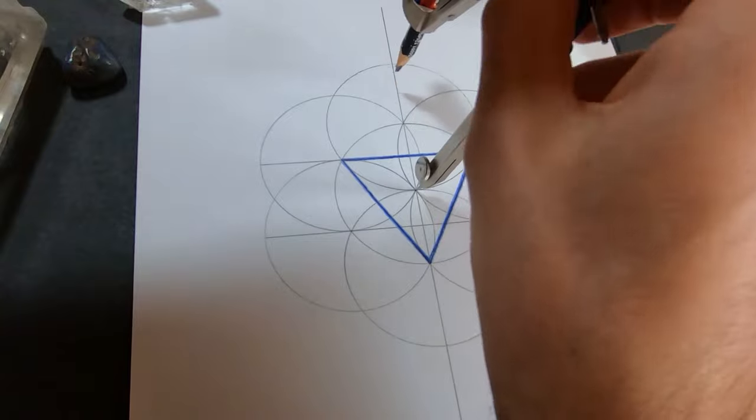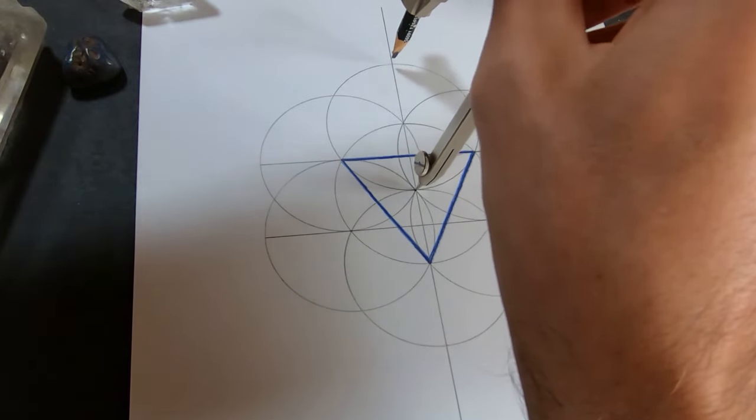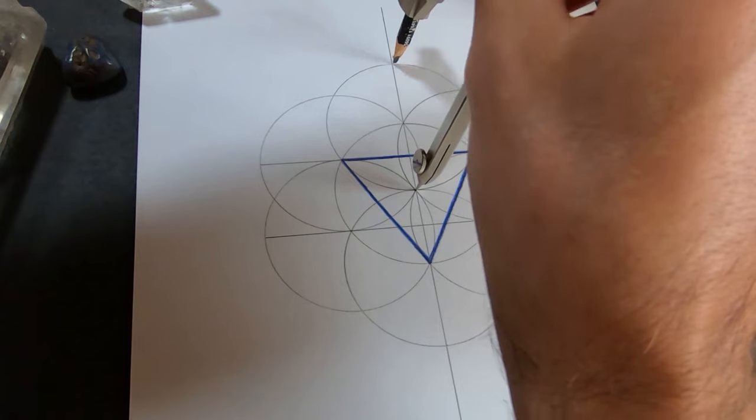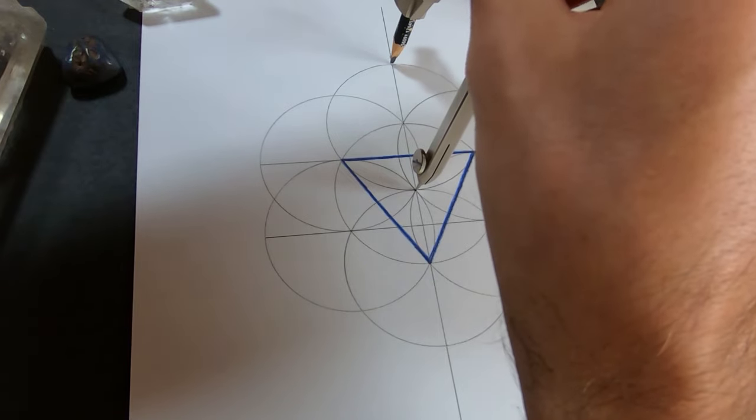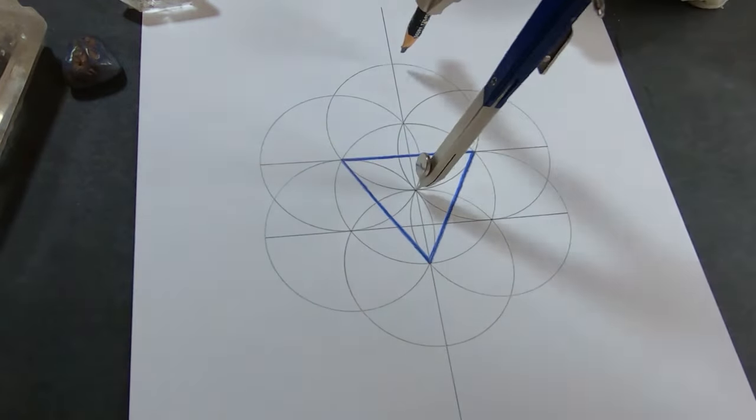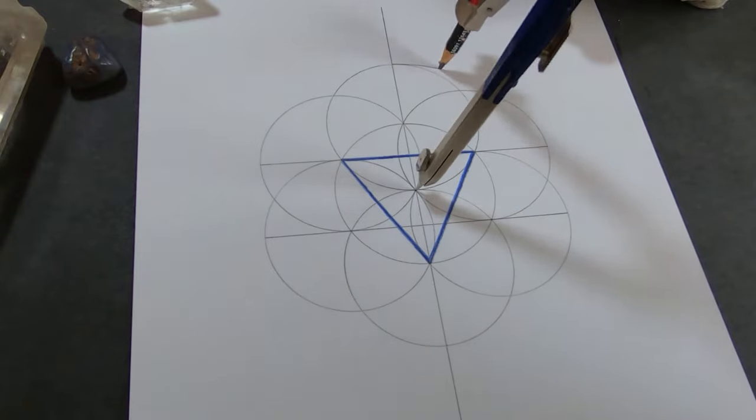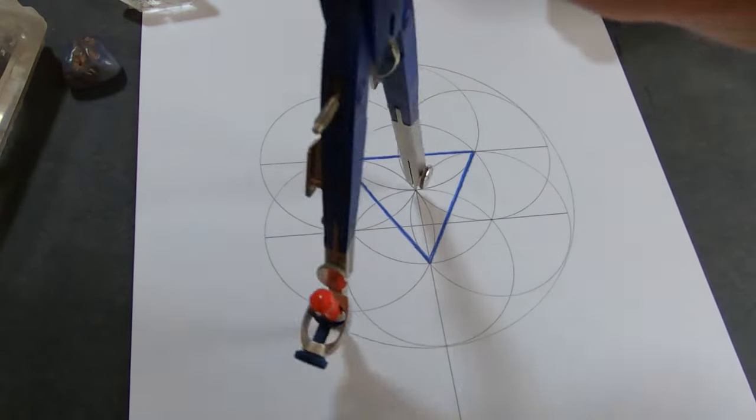Next, I'm going to draw a circle around the whole symbol by putting my compass point right in the center and setting the pencil lead to the top of the seed. Then I'll just draw a circle all the way around.